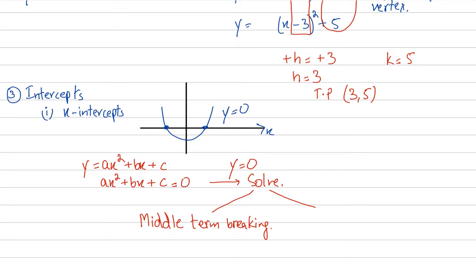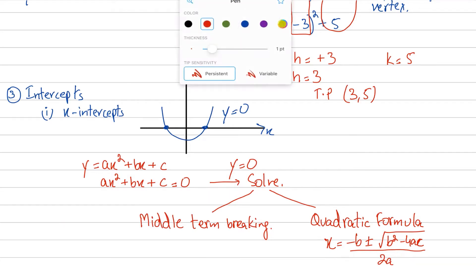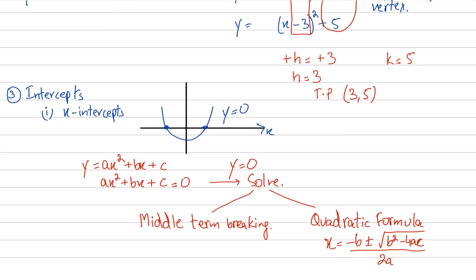The other way, when middle term breaking fails, is to apply the quadratic formula: x equals minus b plus or minus square root of (b squared minus 4ac), upon 2a. In fact, the quadratic formula can be used in any case, irrespective of whether middle term breaking works — the quadratic formula will always give you the answer. These are the two ways in which you can find out the x-intercepts.